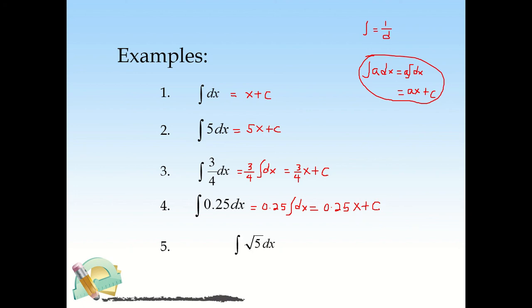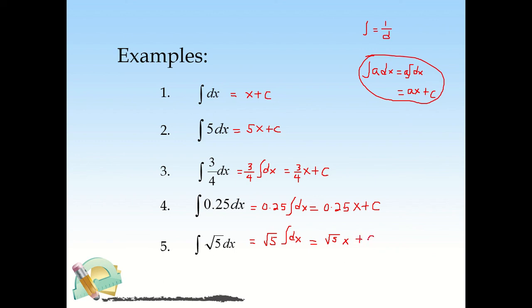Similarly, for the integral of √5·dx, √5 is still a constant. You isolate √5 and multiply by the integral of dx, which is x. So the result is √5·x + C. That's how easy these constant-rule problems are.